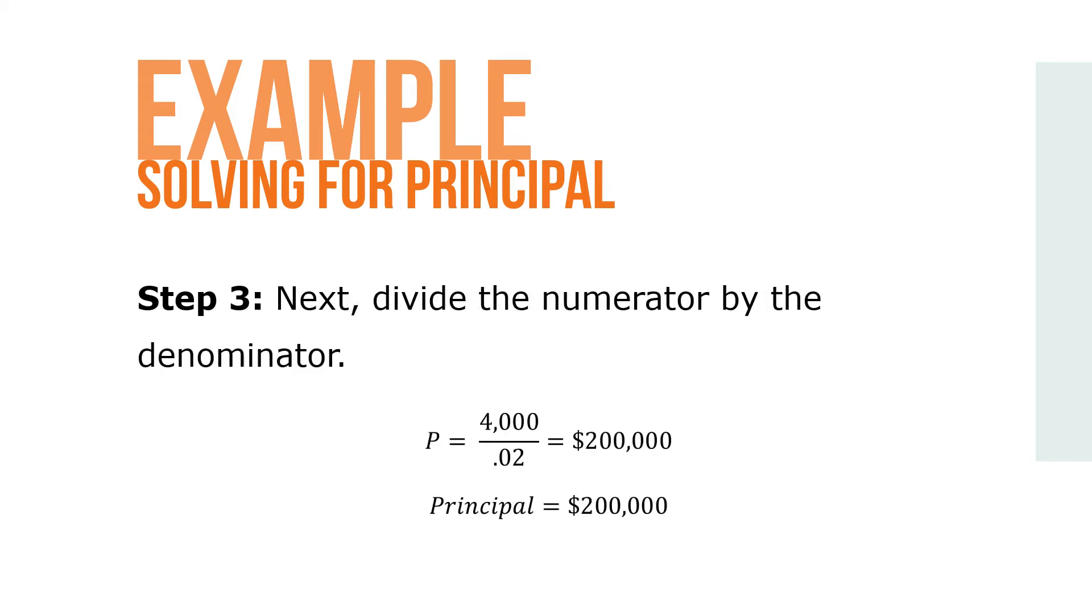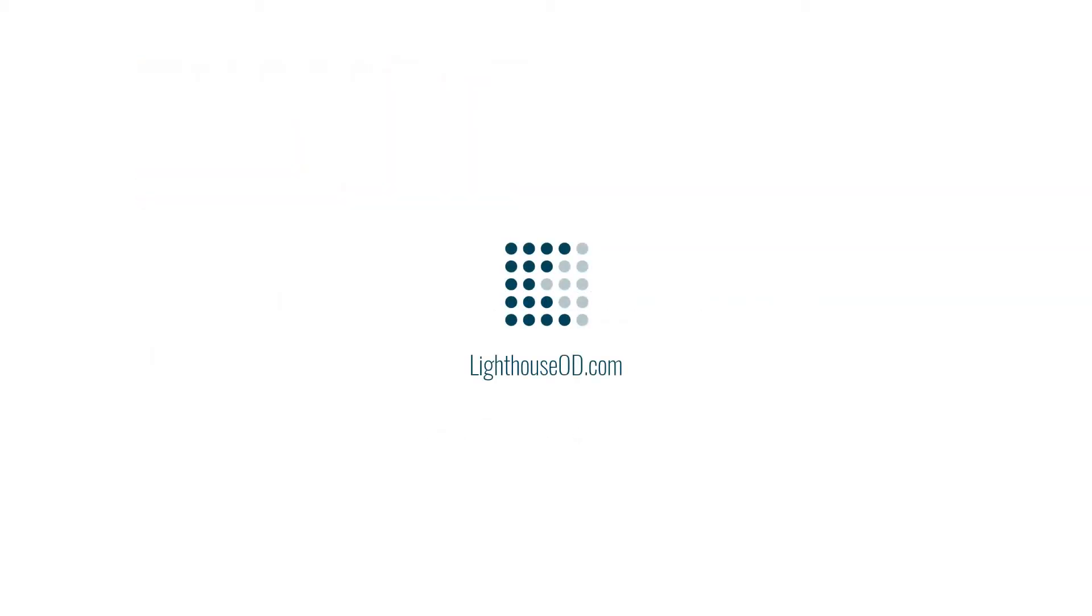Next, divide the numerator by the denominator. So P equals 4000 over 0.02 which equals $200,000. Our principal is $200,000. Thank you.